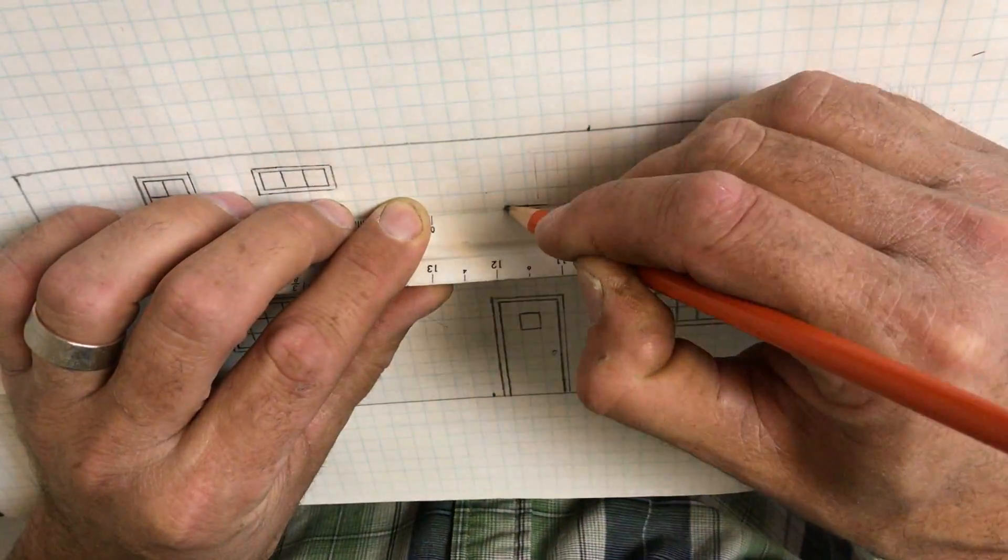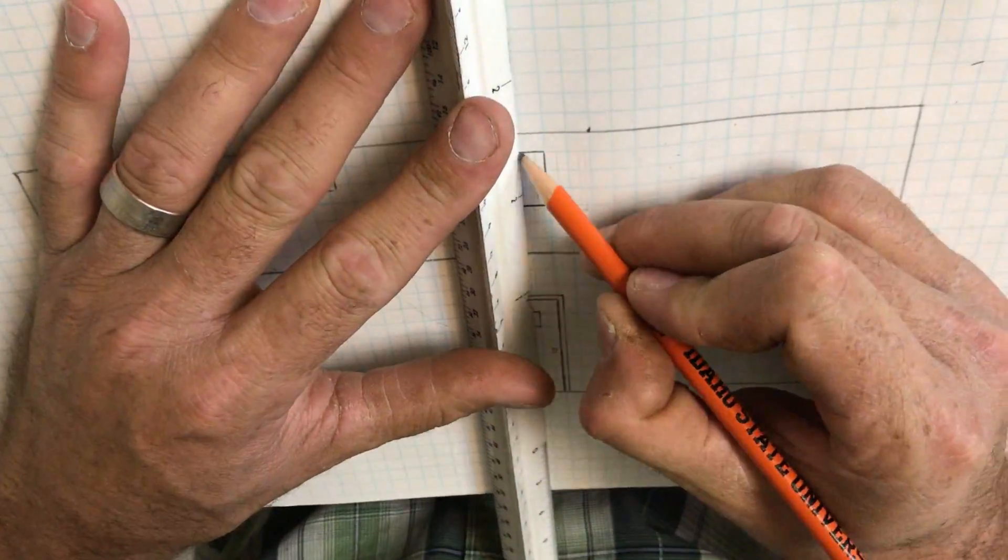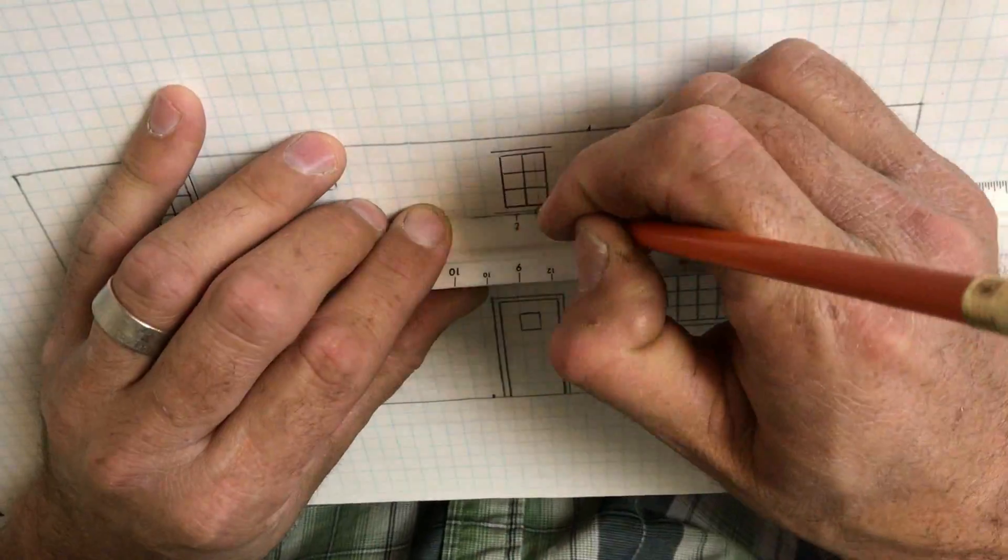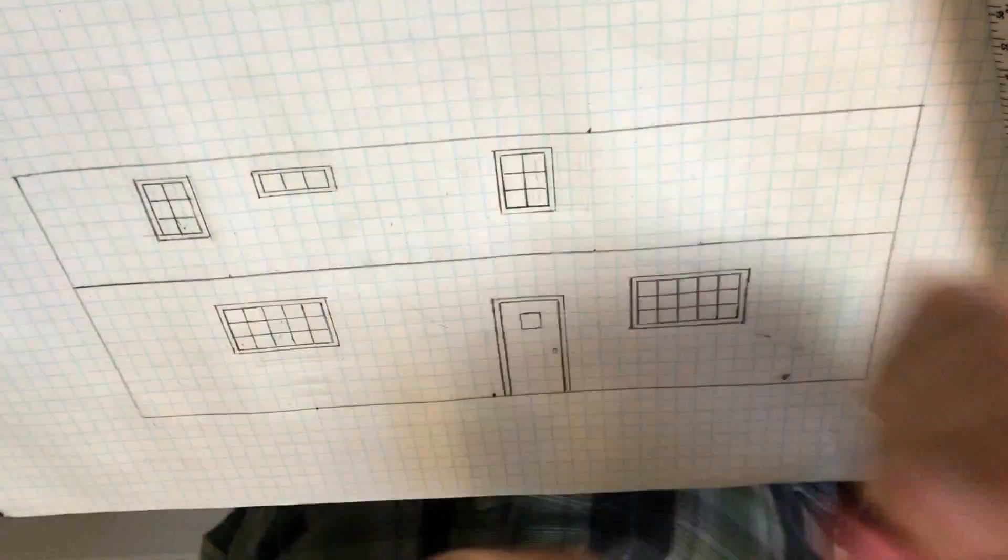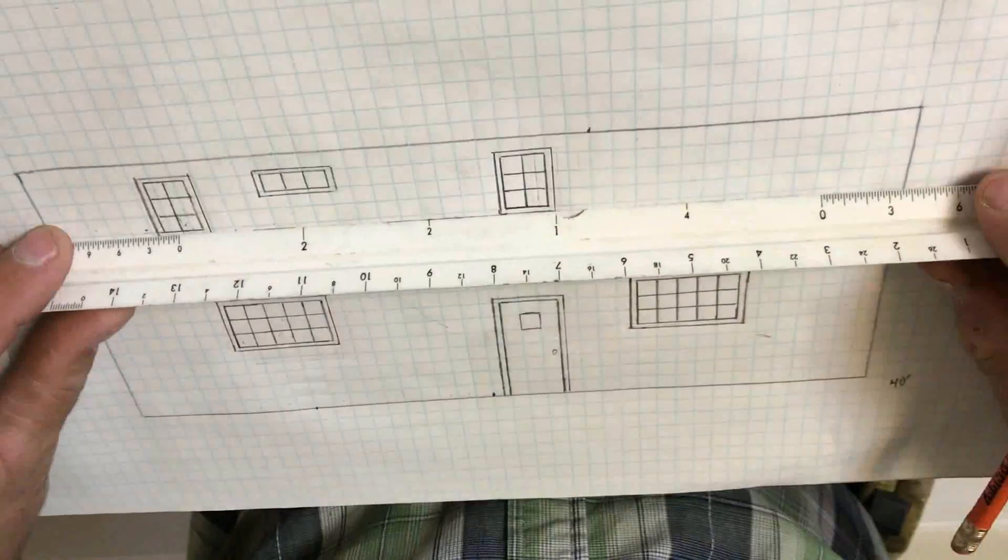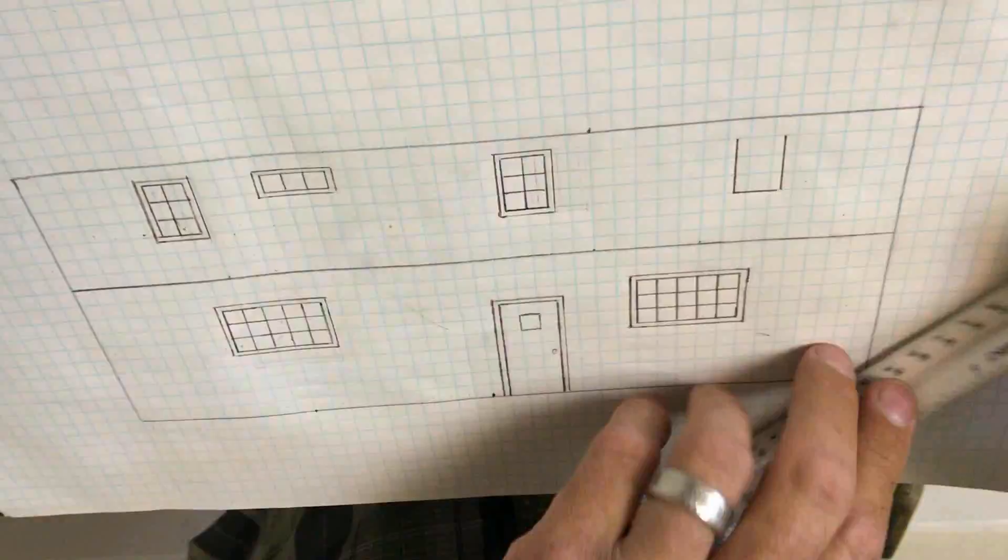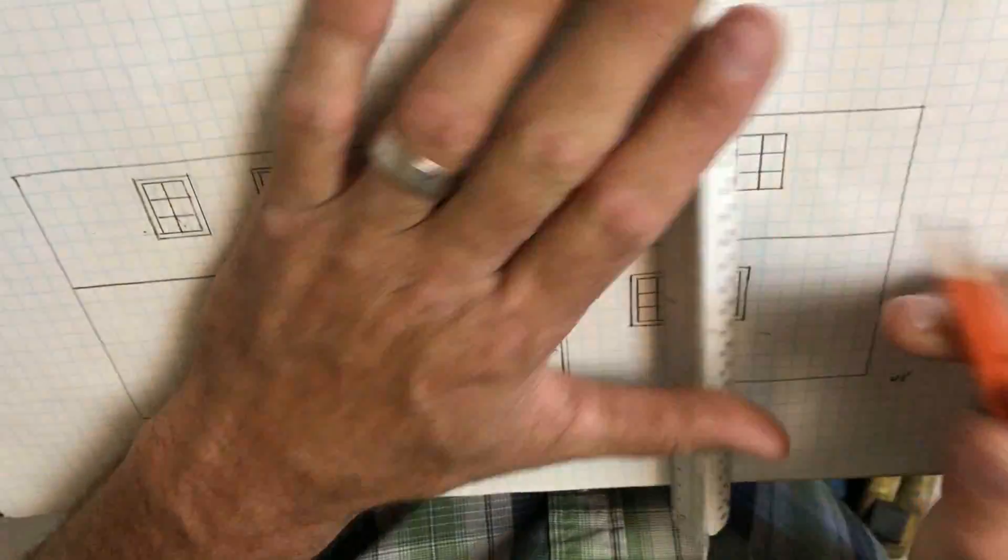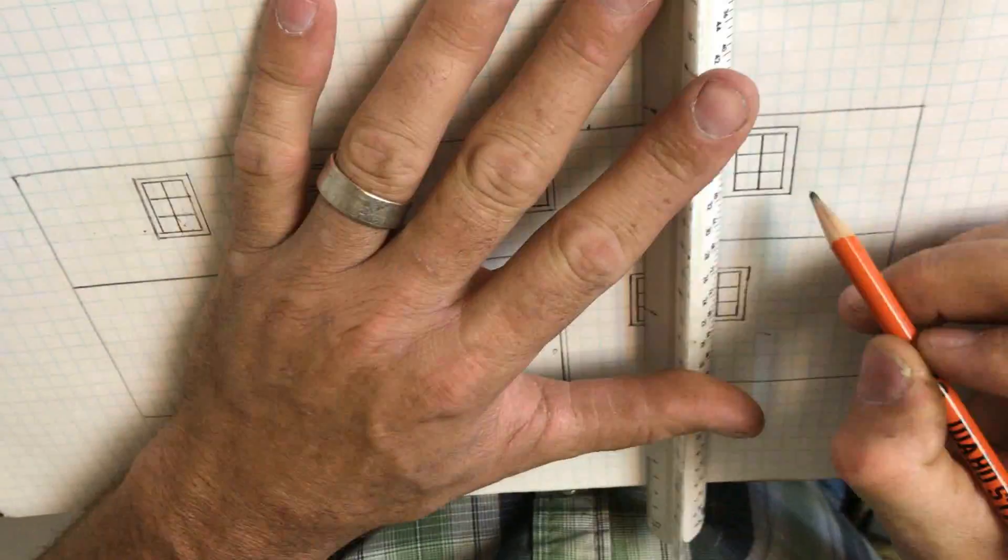I had to position the windows on the second story taking into consideration where the porch will start, where that lower roof line will start, creating the entire full-length porch that we look forward to having.